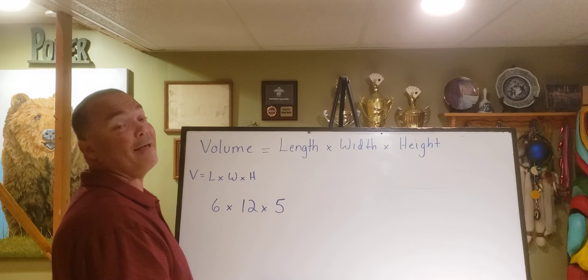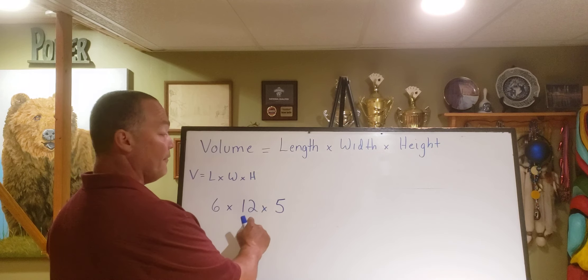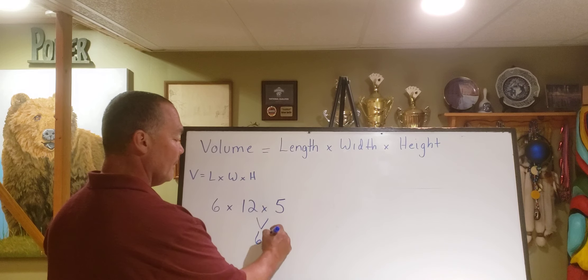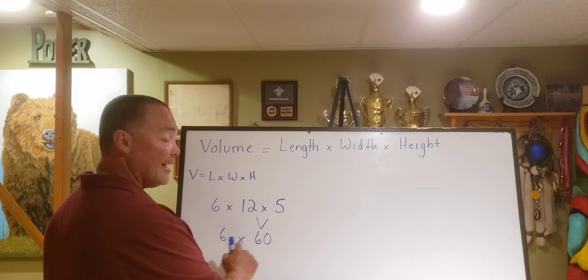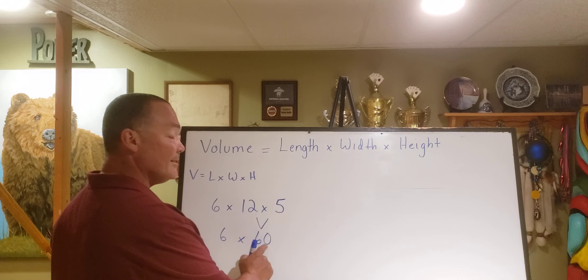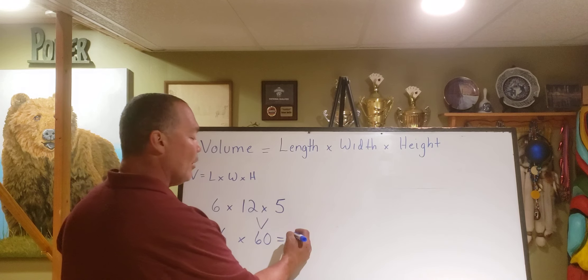For those of you who know your math facts, this is going to become a little easier. Some of you may want to use a calculator. I know that five times twelve instantly is sixty. And then I bring down my six. I know that six times six is thirty-six, but I have to account for my power of ten because it's ten times greater. So what's ten times greater than thirty-six? Three hundred sixty.